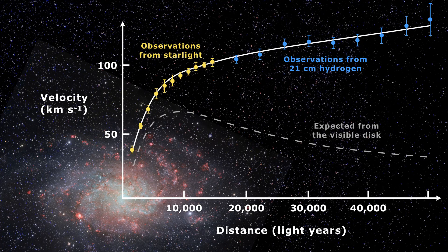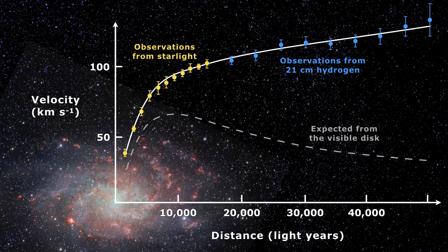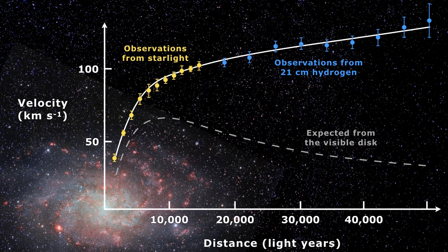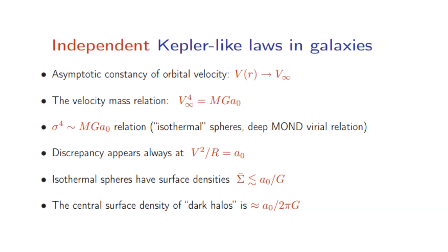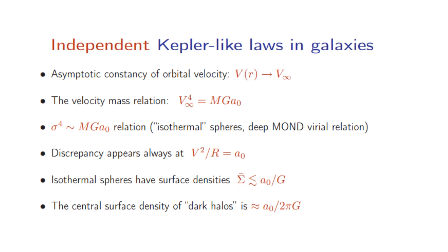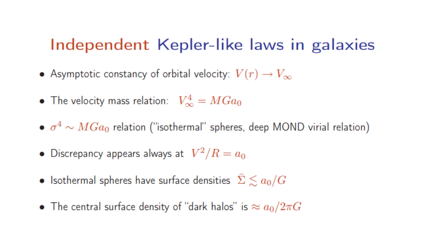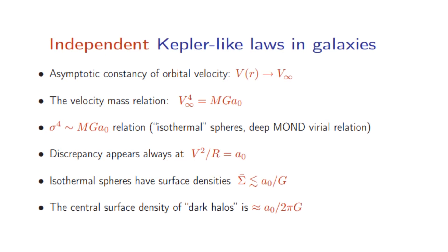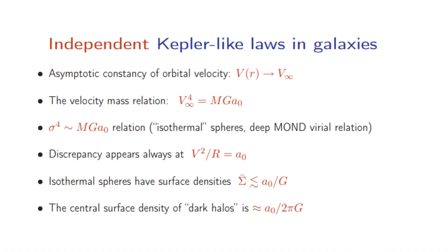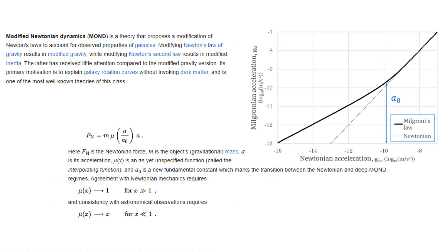We now know that galaxy dynamics are in conflict with general relativity if dark matter doesn't exist. Given the patterns and regularities found in galaxy rotation curves, which seem to arise from a modified law of gravity or inertia rather than an invisible mass distribution, modified Newtonian dynamics was developed based on these regularities.